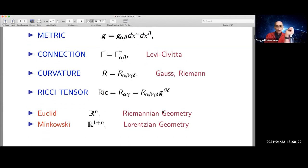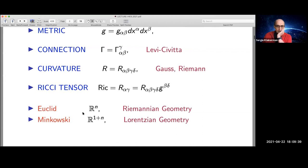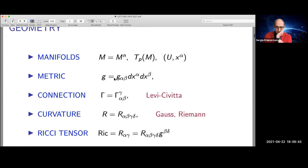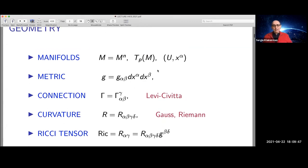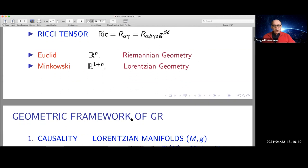These are the basic objects. The simplest manifolds are those of Euclidean geometry — just R^n where distances are measured using the Pythagorean theorem. The generalization is called Riemannian geometry, where the metric is much more complicated and defined on a manifold. Then there is Minkowski space, introduced in the wake of special relativity. The generalization of Minkowskian geometry is called Lorentzian geometry, in honor of the physicist Lorentz.